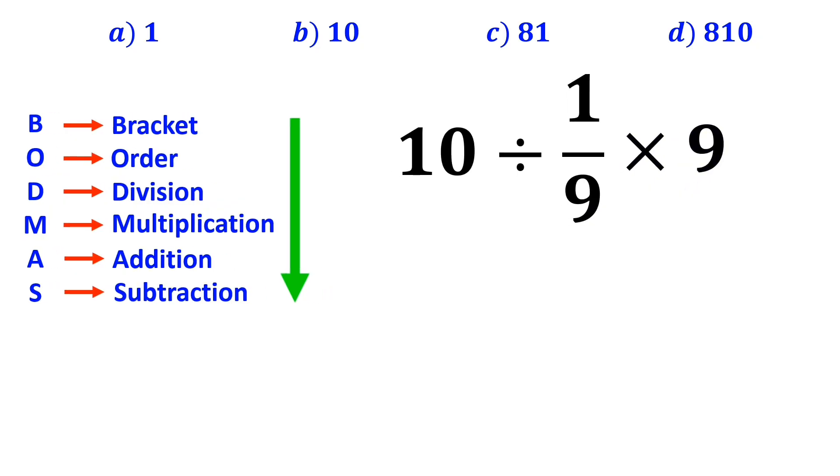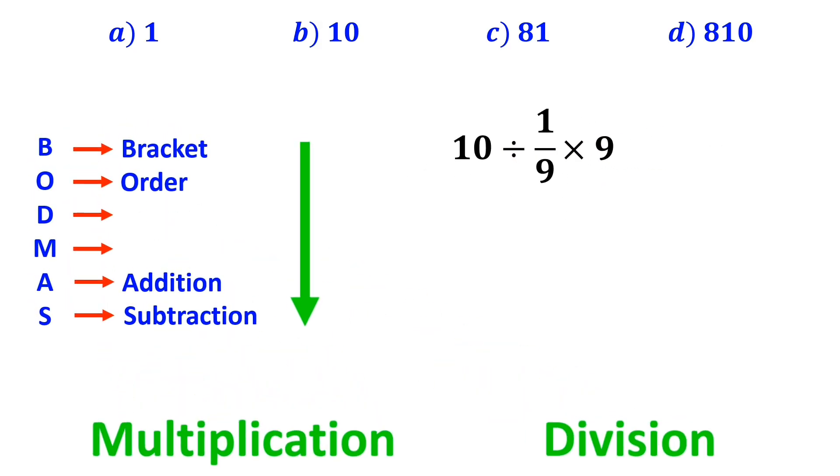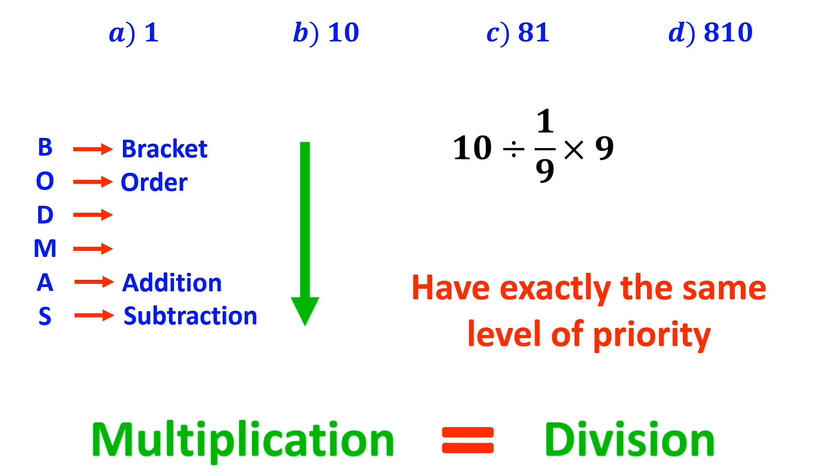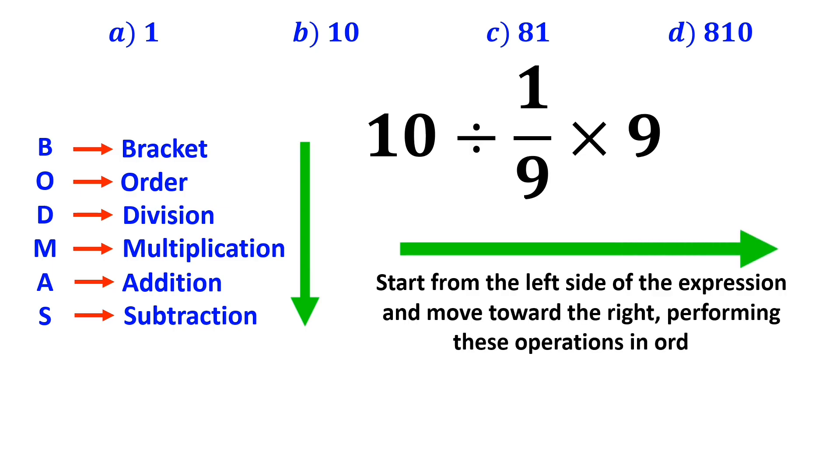In the next step, we handle the division and multiplication. However, it's very important to note that in the BODMAS rule, multiplication and division have exactly the same level of priority. In this case, the best thing to do is to start from the left side of the expression and move toward the right, performing these operations in order.